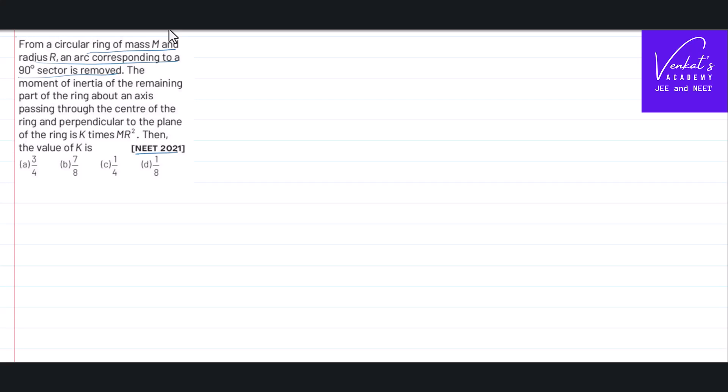So first let us see if there is a circular ring like this. The moment of inertia of a circular ring about an axis passing through the center perpendicular to the plane, when mass of the ring is M, its radius is R, is MR square.